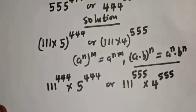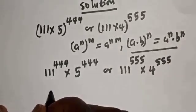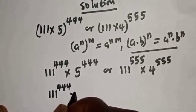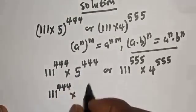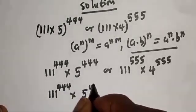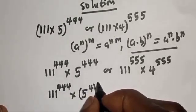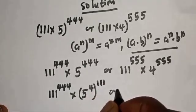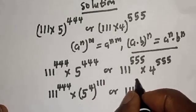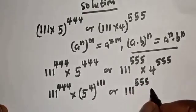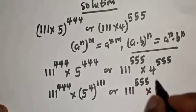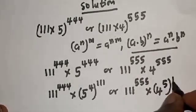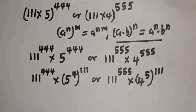Now, 111 raised to power 444, multiplied by 5 raised to power 444, can be rewritten. The term 5 raised to power 444 can be written as 5 raised to power 4, all raised to power 111. Similarly, on the other side, 4 raised to power 555 becomes 4 raised to power 5, all raised to power 111.